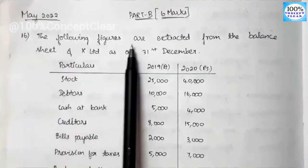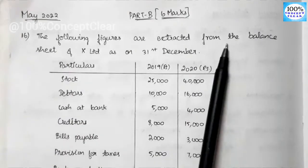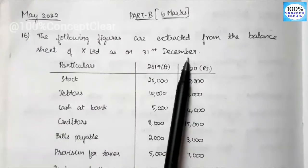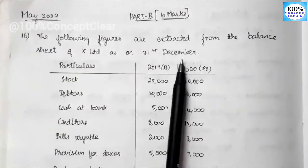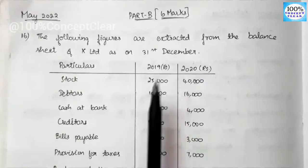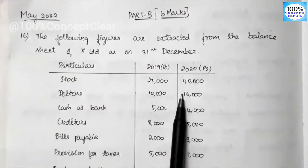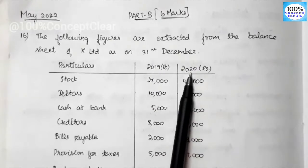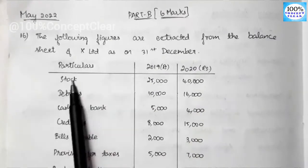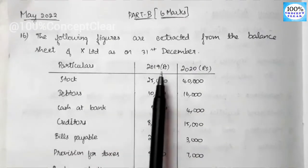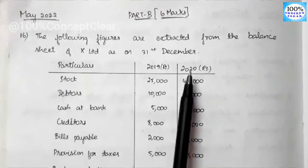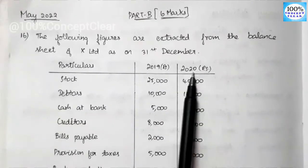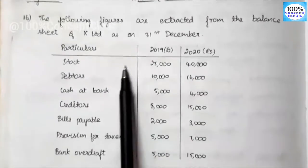The following figures are extracted from the balance sheet of X Ltd. as on 31st December. We will be able to answer the balance sheet of X Ltd. as on 31st December — two years: 2019 and 2020.